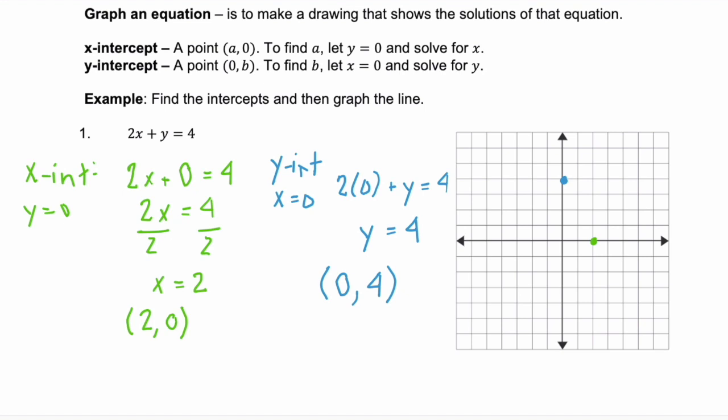Now, because we have plotted both intercepts, we can connect these two points. And we get that straight line, which is a graph of this equation 2x plus y equals four.